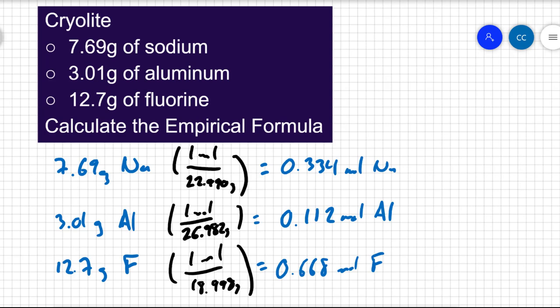In other words, I'm going to just divide by 0.112. And that's going to tell me that I have one aluminum present. But if I divide one thing by 0.112, I'm going to divide them all by 0.112. And when you divide 0.334 by 0.112, I get 2.98. And that's really close to 3. So I'm just going to say that that is 3 sodiums.